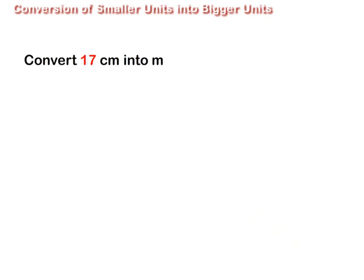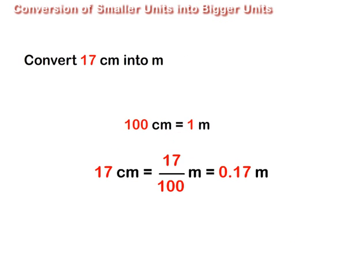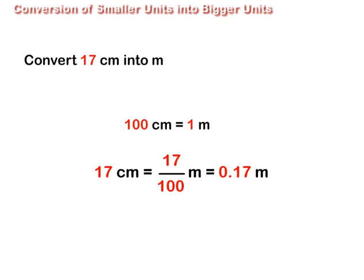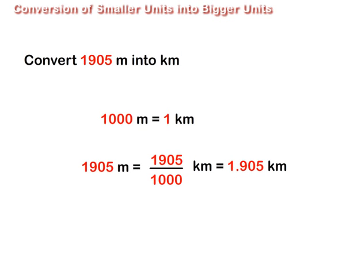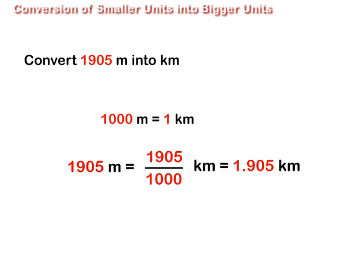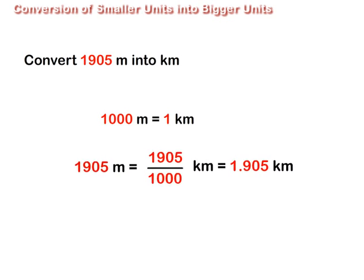To convert 17 cm into m, we divide 17 by 100 because 100 cm is equal to 1 m. Similarly, 1,905 m is equal to 1.905 km, obtained by dividing 1905 by 1000.